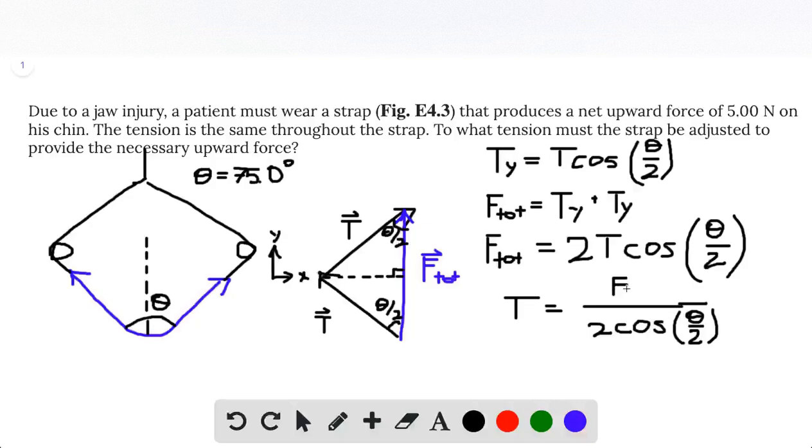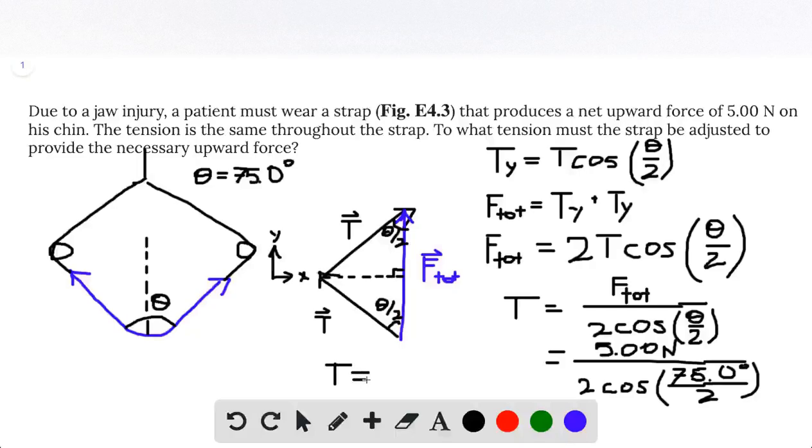Top it all off with F_total, and then that is what our answer looks like in variables. We can go ahead and plug in some numbers. Let's do the last step. That's supposed to be a 5, 5.00 newtons, and then on the bottom 2 cosine 75.0 degrees over 2. To three significant figures that's going to be 3.15 newtons. Don't forget the units, put a nice big box around that, and then we are all done.